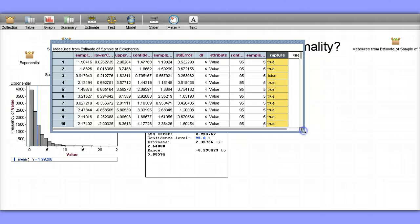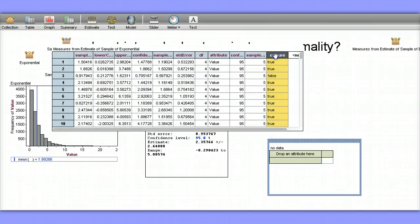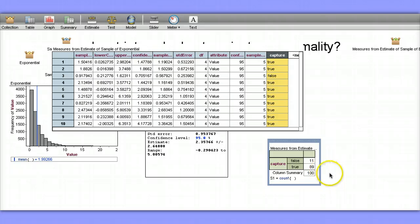Rather than having Fathom or having us count up the trues and falses ourselves, let's create a summary table and have Fathom do that for us. I'll drag capture down here and see that 89% of the confidence intervals captured the truth, and our capture rate should be closer to 95% since these were 95% confidence intervals.